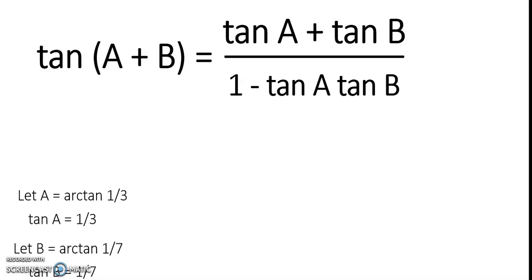We let A equals arctan 1 over 3 and B equals arctan 1 over 7, so we have tangent of A equals 1 over 3 and tangent of B equals 1 over 7.